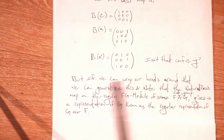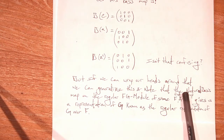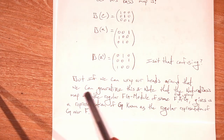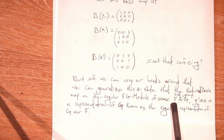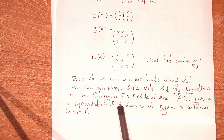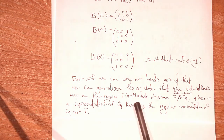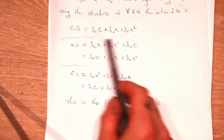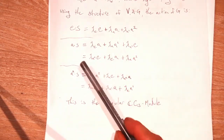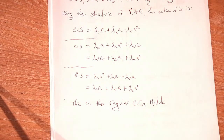But if we can wrap our heads around that, we can generalize this. We note that the natural basis map on the regular FG module of some field and some group gives us a representation of G known as the regular representation of G over F. I've mentioned this before. How did I find these, though? What I did is I looked at these and I applied the map. I think it would be worth doing a little example of this. Let me grab a notebook.